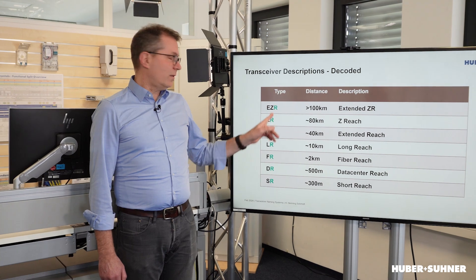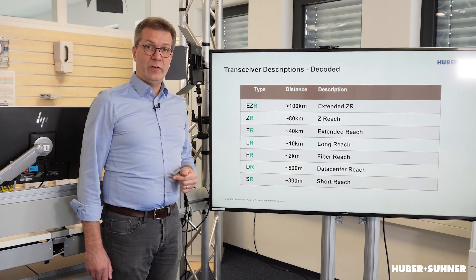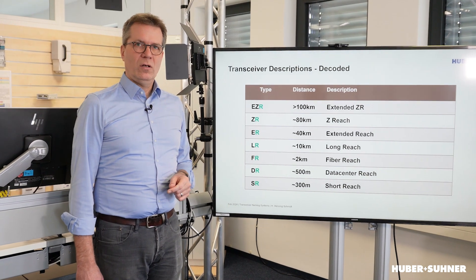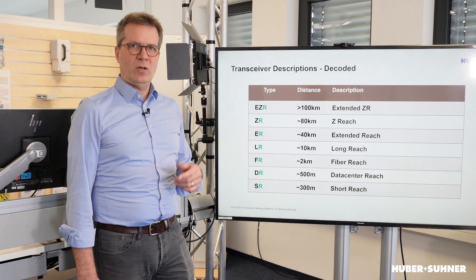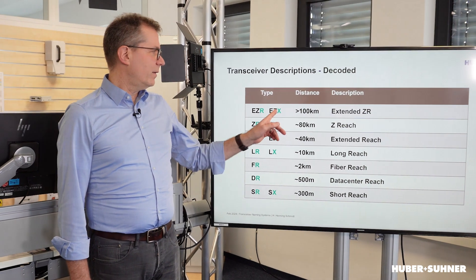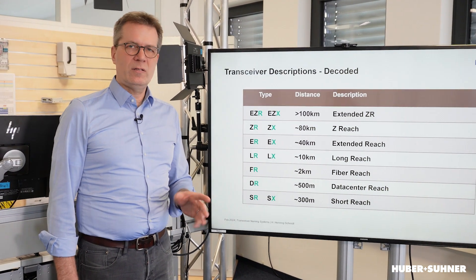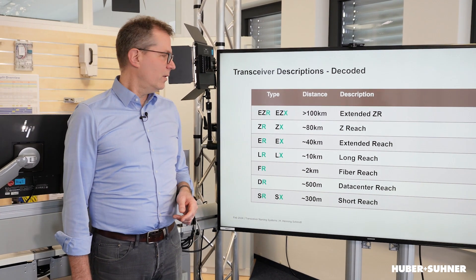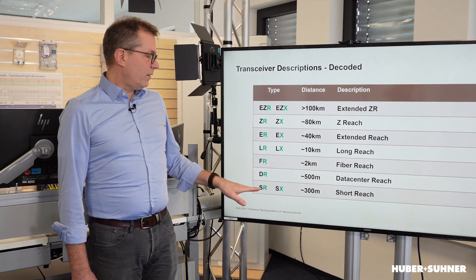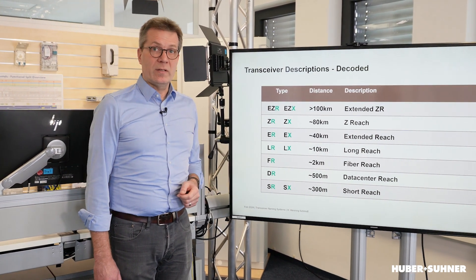The R in these descriptions stands for an encoding scheme — a rather efficient encoding scheme that is standardized — and it has to be used for all data rates of 10GB and beyond. Historically, there has been a previous encoding scheme, not as efficient, used primarily for 1GB. That is how you find those different descriptions. The S, D, F, and L all describe the achievable distance.